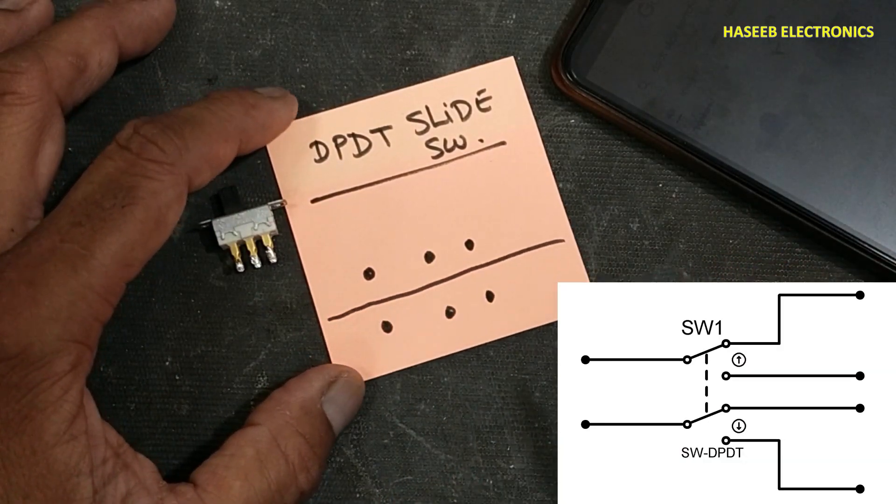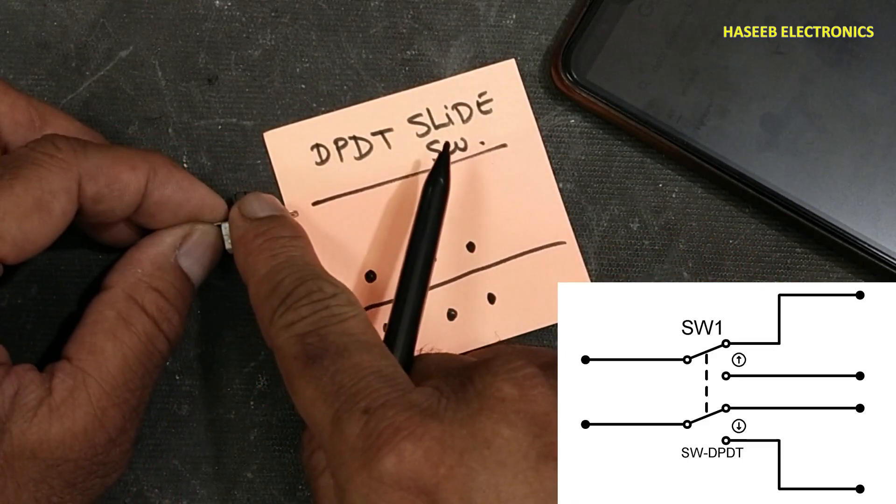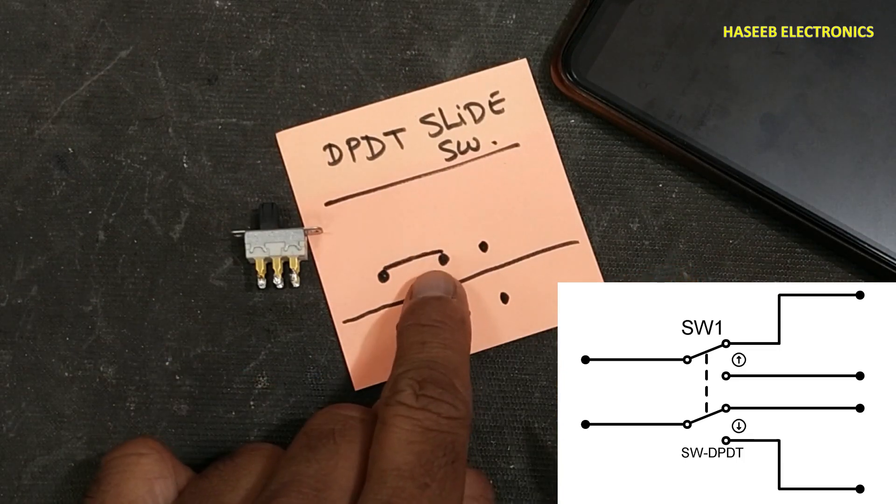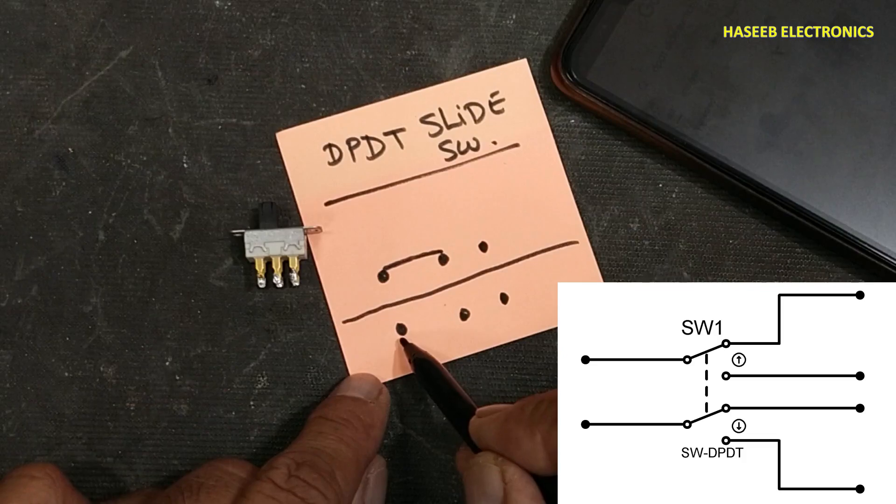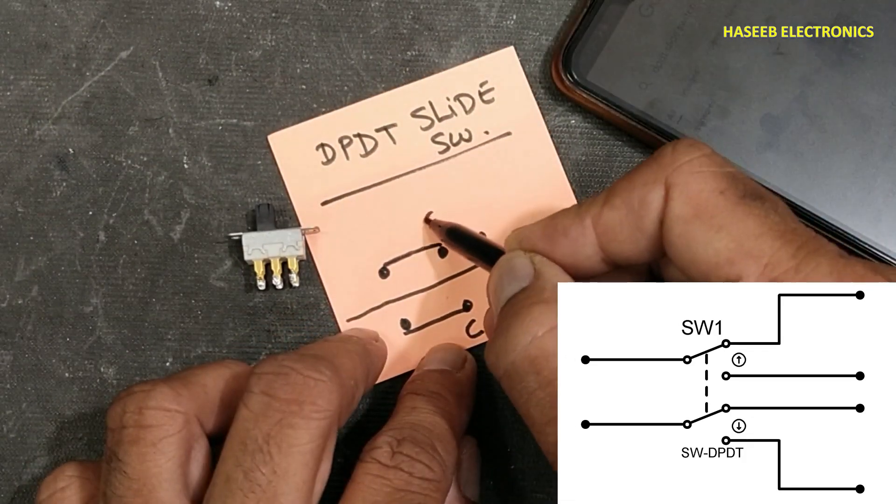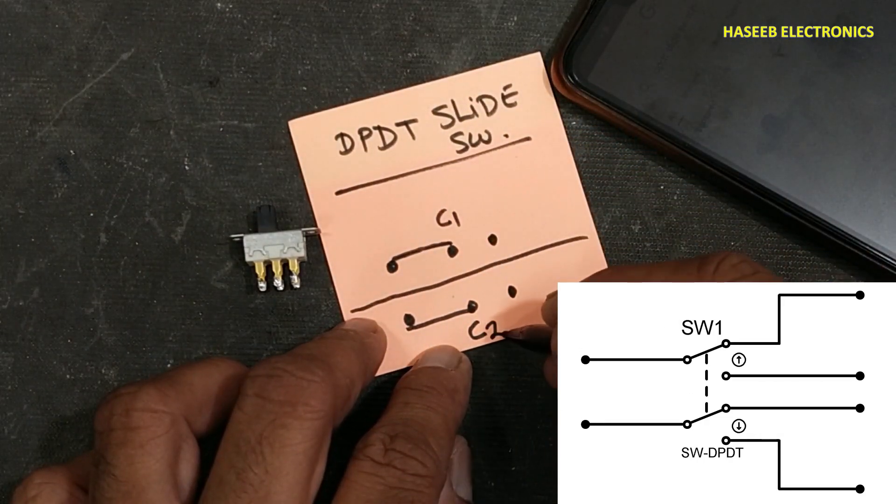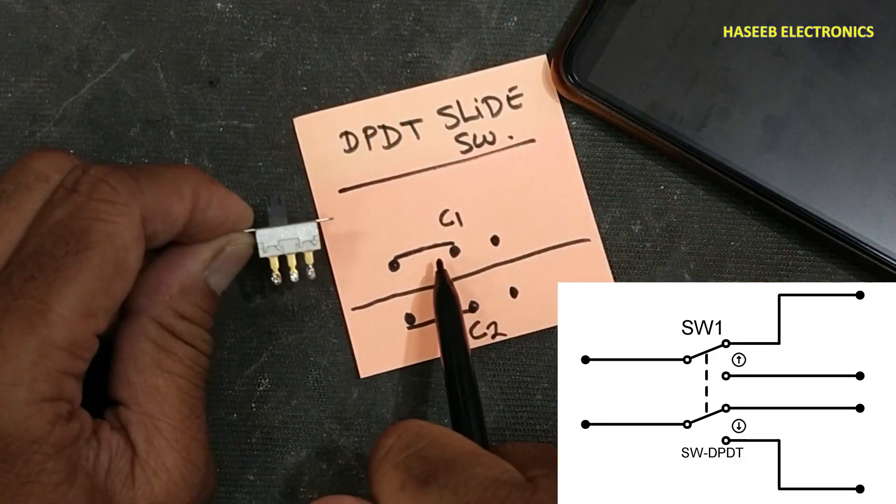We can say this switch is in two portions. When this slider is at left side, it will make connection between common and this out. And same way here, common. We can say this is common one, common two. When it is in left side, it will make connection between these two poles, common and this out.